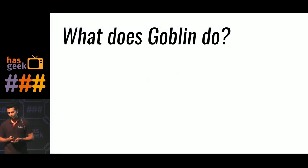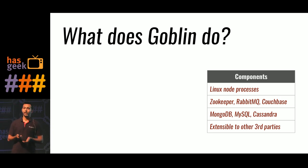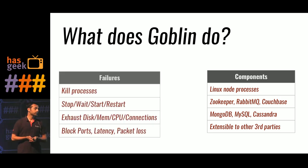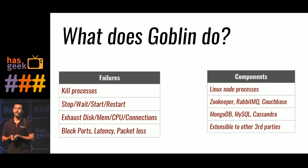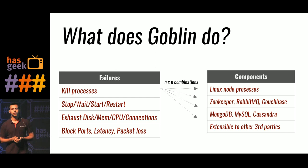That is how Goblin was born. Essentially, what Goblin does is it takes a bunch of components — Linux processes, third-party processes, or anything you build on your own — components like Zookeeper, Rabbit, Couchbase, MySQL, Cassandra, and Goblin comes with support for these, and you can extend it to any component. Given a list of components, you can apply a list of failures to any of them: kill processes, restart services, exhaust disk memory, CPU, or connections on the node, introduce latency between any two nodes, or cause packet loss. When you have n-by-n combinations, you get a pretty long and effective list of tests to measure the resilience of your system.